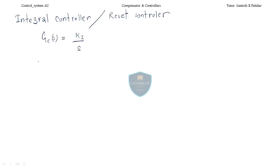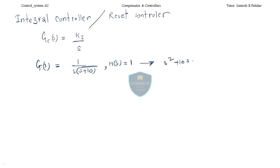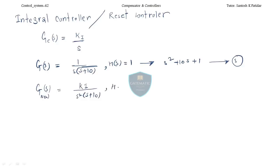Again I will take an example. Suppose you have G(s) = 1 divided by s(s+10), with unity feedback. Let us find out the Routh-Hurwitz characteristic equation. It will be s² + 10s + 1, and this system is stable — it will have no poles in the right half plane.